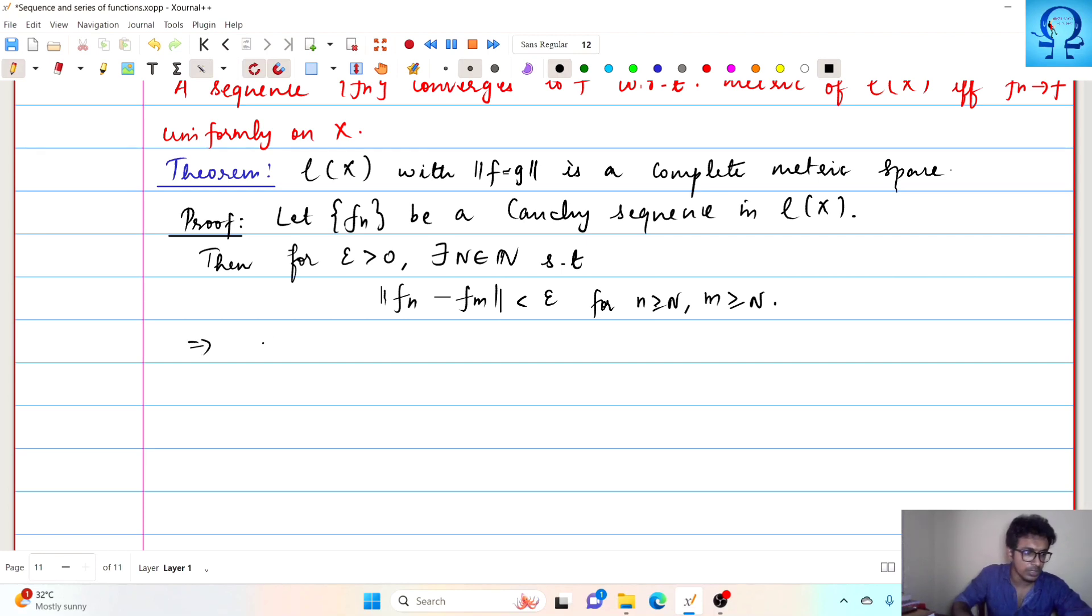Now we are able to see that this function f, so if this condition satisfies, then what happens? f_n converges uniformly to f on X.